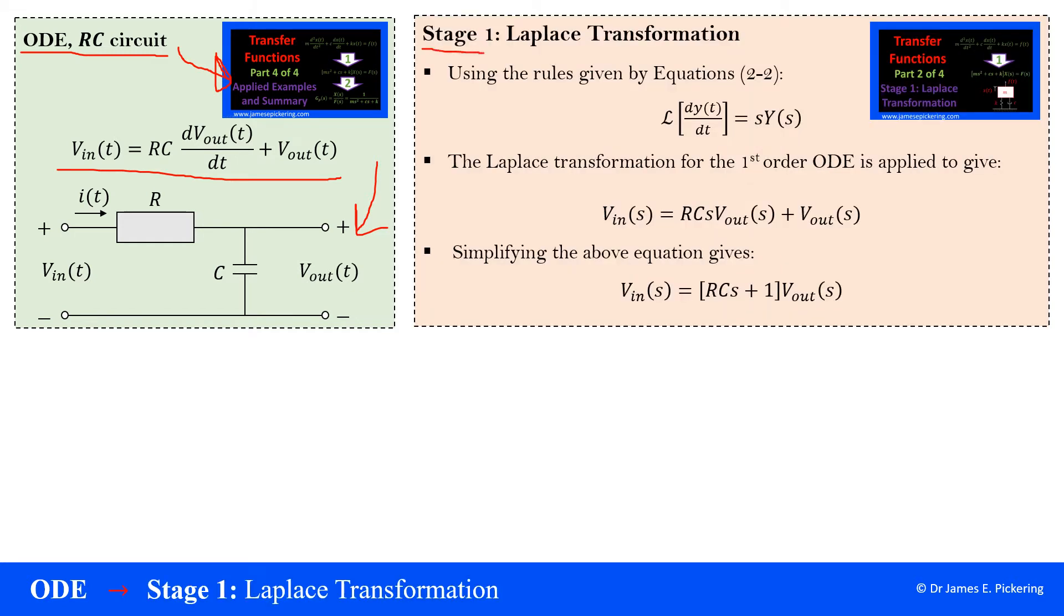So stage one, which is the Laplace transformation, and details of this transformation are given in part two of all the videos on transfer functions. The equation for this particular ordinary differential equation, because it's first order, so we're just going to use equation 2-2 from part two of four, is given by this. So this Laplace transformation, so this symbol here, dy of t over dt, effectively becomes s, or is equal to s, which is your Laplace variable, capital Y of s. Because d by dt effectively becomes s, and y of t becomes capital Y of s.